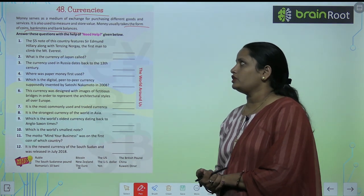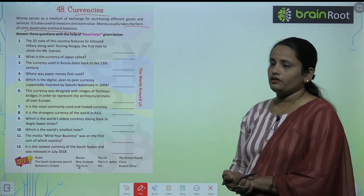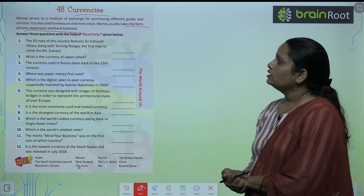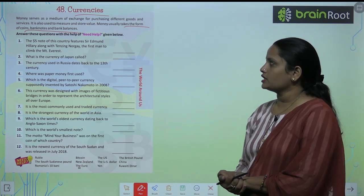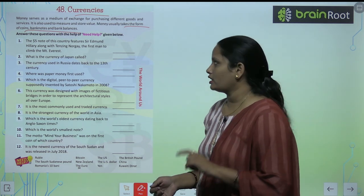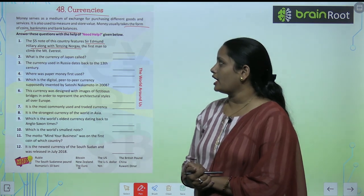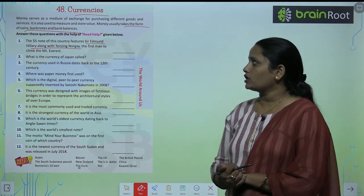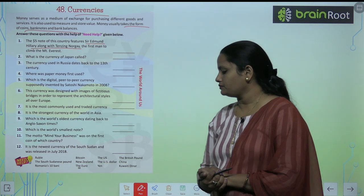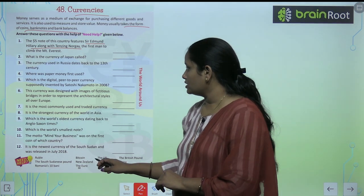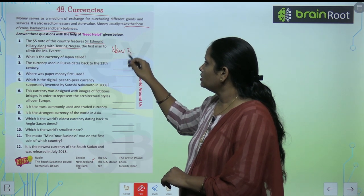Answer these questions with the help of the Need Help Box given below. The first one is: The five dollar note of this country features Sir Edmund Hillary along with Tenzing Norgay — the first men to climb Mount Everest. The answer is New Zealand.